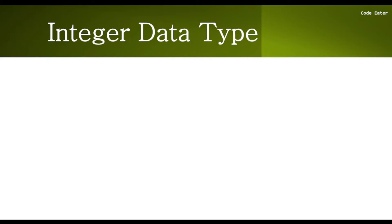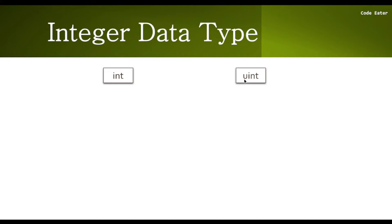In this video we are going to talk about the integer data type in Solidity. In Solidity we have two types of integer data types: the first one is int and the second one is uint. int can hold both positive as well as negative numbers, while uint can hold only positive numbers. uint stands for unsigned integer, while int stands for integer.